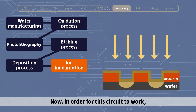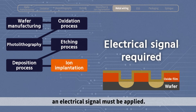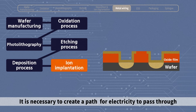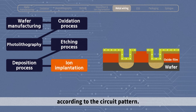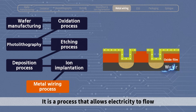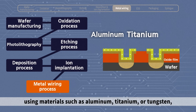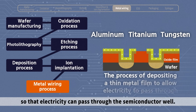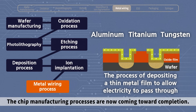Now, in order for this circuit to work, an electrical signal must be applied. It is necessary to create a path for electricity to pass through according to the circuit pattern. This process is called the metal wiring process. It allows electricity to flow by depositing a thin metal film using materials such as aluminum, titanium, or tungsten, so that electricity can pass through the semiconductor well.